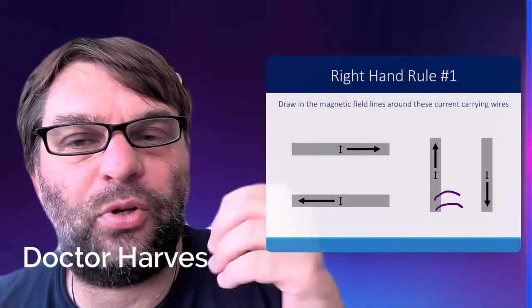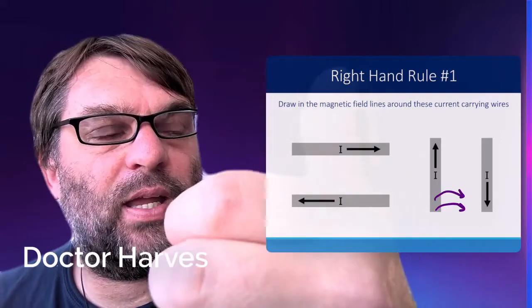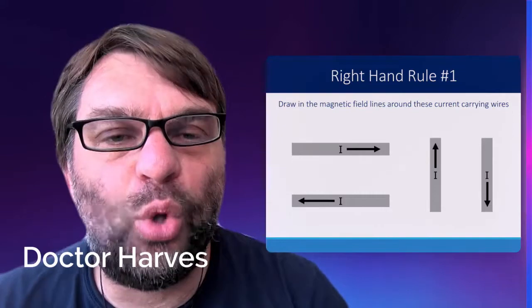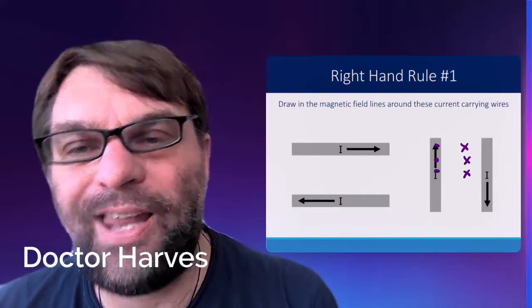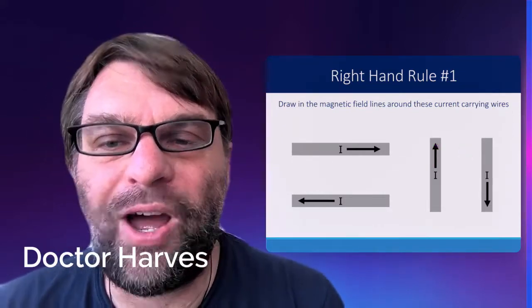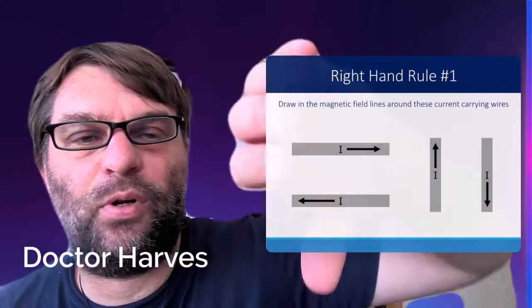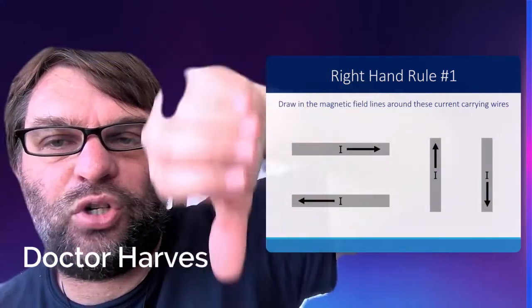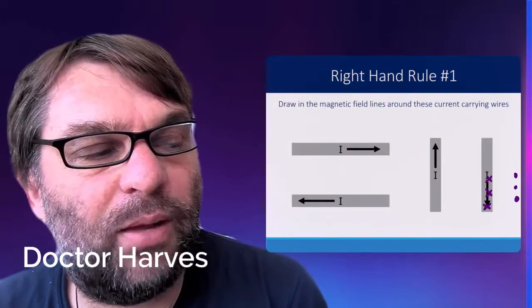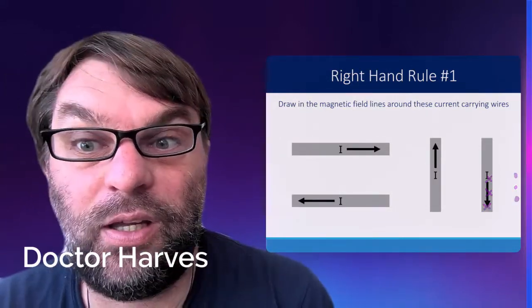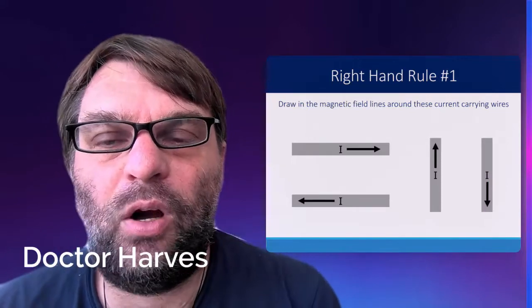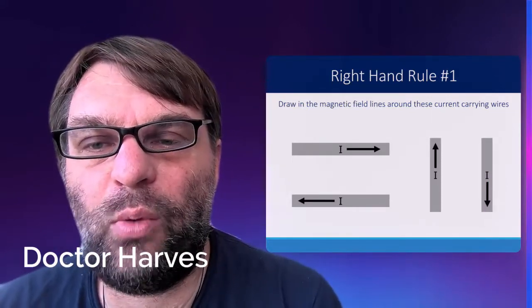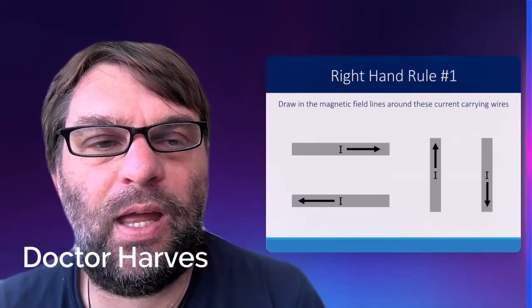Again, using the right-hand rule, you hook the thumb in the direction of the current. That means that the magnetic field is coming towards you on the left and away from you on the right, and correspondingly with the last one, that means that the current is going down. So, the magnetic field is going away from you on the left and towards you on the right, which is represented by the dots and the crosses.